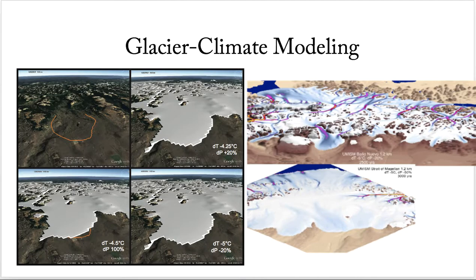Finally, I'm planning to do some glacier climate modeling with the help of Esteban, who's done some modeling work, so we can figure out how much colder and wetter it had to be to allow the glacier to grow to the extents that we determine from the mapping and the chronology. The Patagonian ice sheet is important for sea level rise and as a natural and water resource, and it's really important that we understand what controls the variability of these glaciers in order to better predict how they're going to behave as we warm the climate.